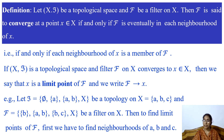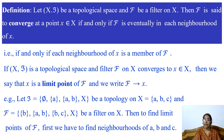If (X, T) is a topological space and filter F on X converges to point x, then we say that x is a limit point of filter F, and we write F converges to x.